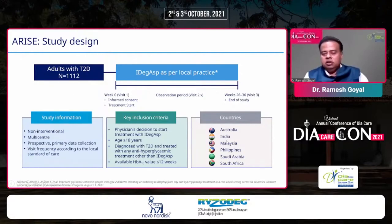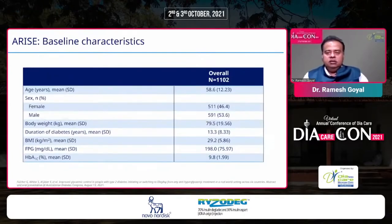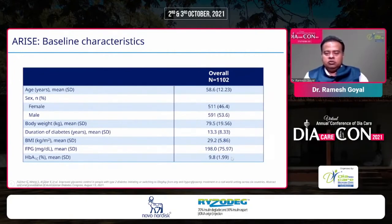Participating countries included India, Australia, Malaysia, Philippines, Saudi Arabia, and South Africa. Baseline characteristics showed a mean age of 58.6 years with an equal male-to-female ratio, mean body weight of 79.5 kg, mean diabetes duration of 13.3 years, mean BMI of 29.2, mean fasting plasma glucose of 198.5 mg/dL, and mean HbA1c of 9.8%. These baseline characteristics match the routine patients we see daily in our OPDs, making this a truly real-world patient population.